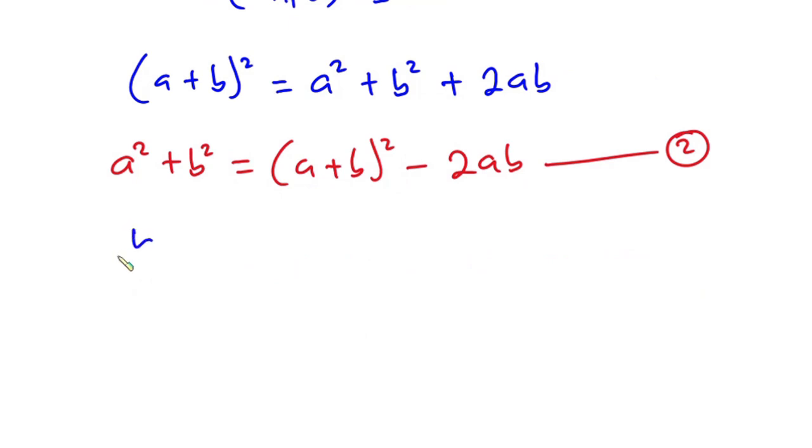From the problem we have to find b over a plus a over b. Now if we try to combine these two fractions, we have a squared plus b squared over ab. But from equation 2, we know what a squared plus b squared is.